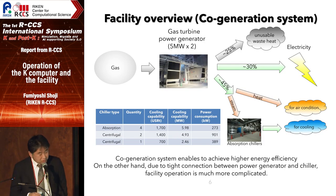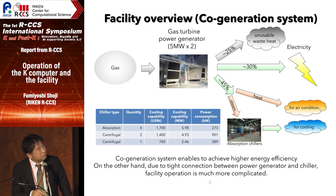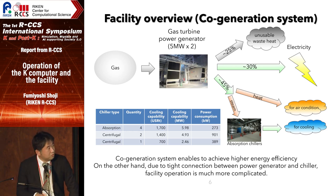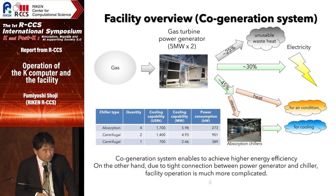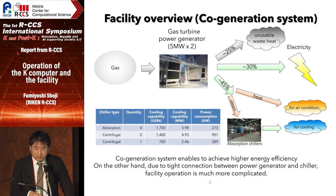This slide shows the key functions of our facility. We have gas turbine power generators. The potential energy of gas can be converted to electricity at up to 30 percent efficiency. However, our system can also use part of the waste heat — to generate heat and to produce chilled water. This kind of system is called a co-generation or tri-generation system. This system is needed to achieve higher energy efficiency, but because the power generation and chiller systems are tightly connected, operation is not easy.